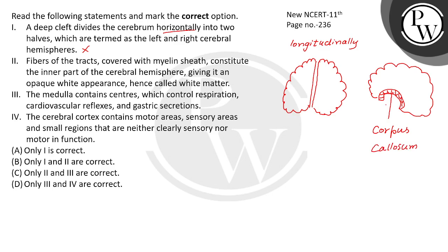Now, what do you see here in the side view? There is a cortex region — an outer layer. What do you call it? Cortex. And there is an inner part which is dotted.